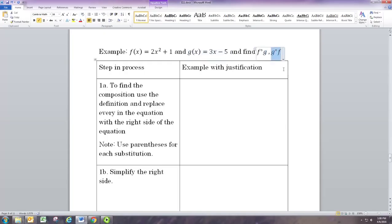In the first example, the function f is 2x squared plus 1, and the function g is 3x minus 5. We want to look at doing f circle g and g circle f.